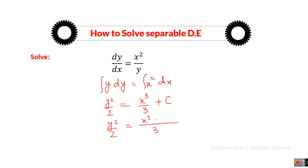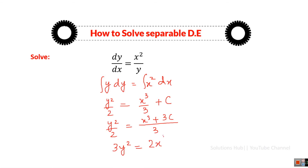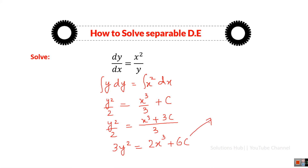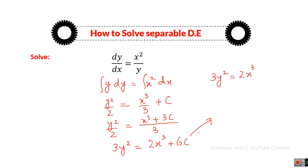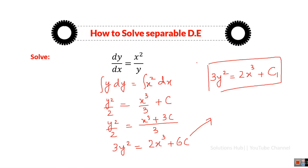After further simplification, taking the LCM, the right side becomes X³ plus 3C. Cross multiplying gives 3Y² = 2X³ + 6C. We can write this more generally as 3Y² = 2X³ + C₁, where C₁ is just a constant. This is the general solution of that separable differential equation.